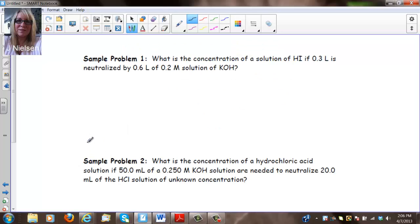So let's do a few sample problems. What is the concentration of a solution of HI if 0.3 liters is neutralized by 0.6 liters of 0.2 molar KOH. So 0.3 liters of HI is going to be my VA. 0.6 is going to be my VB and 0.2 is going to be my MB. And it says what is the concentration of HI? So I don't know MA. That's what I'm trying to find.